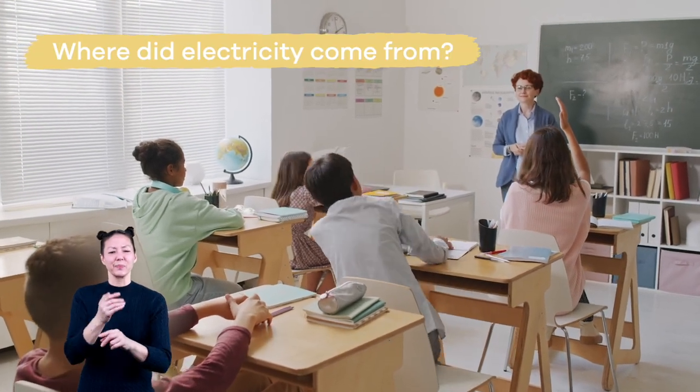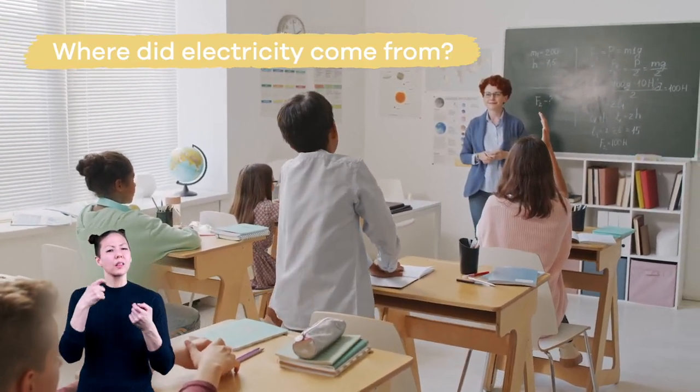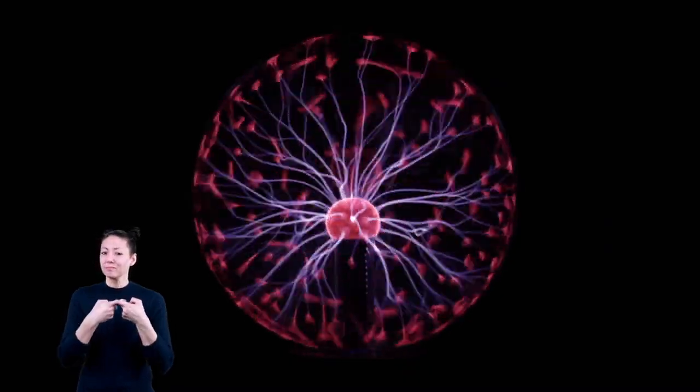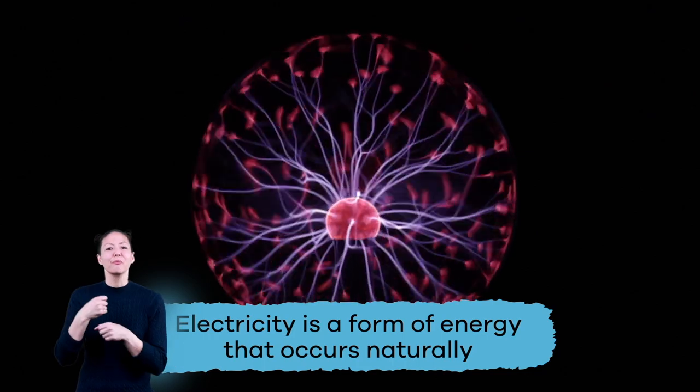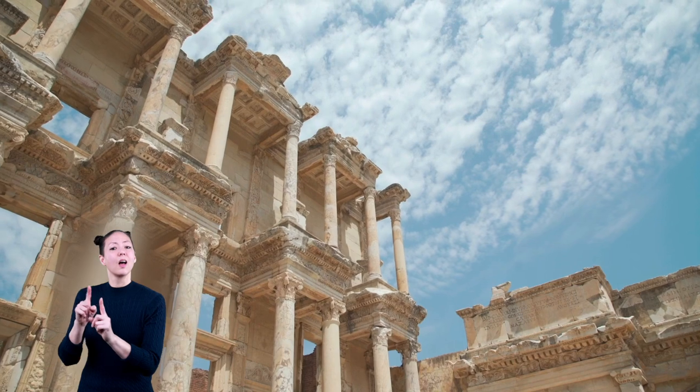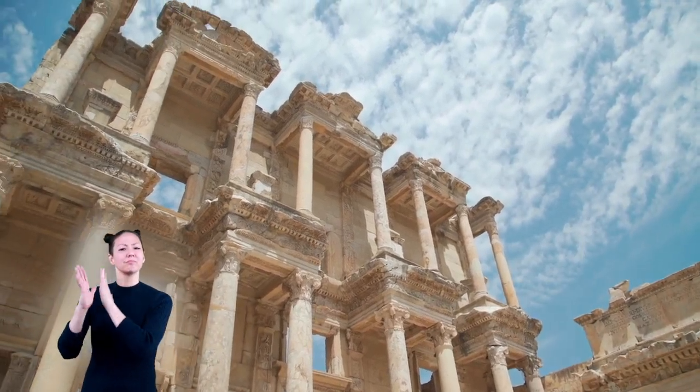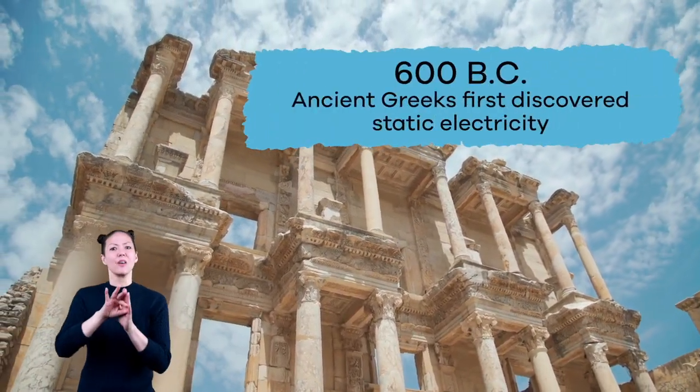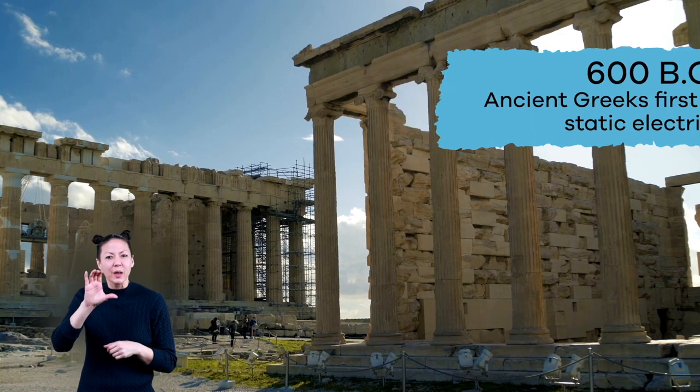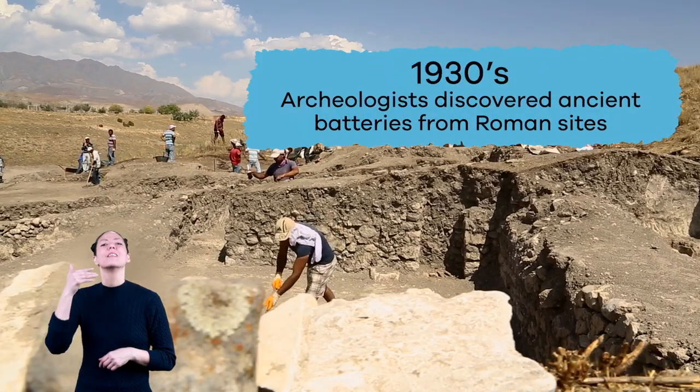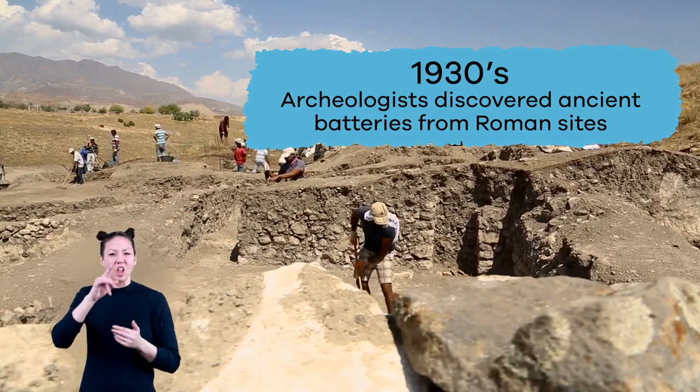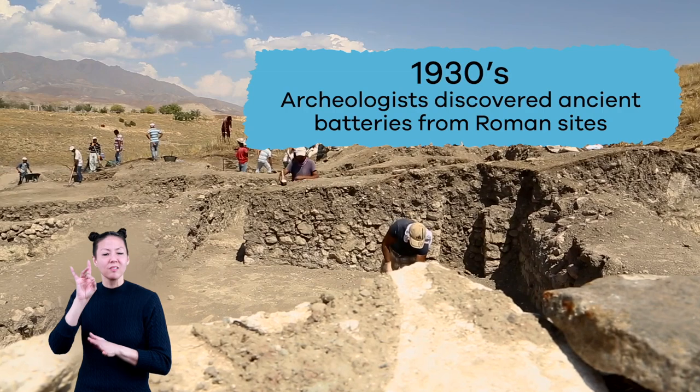So, where did electricity come from? Electricity wasn't invented by anyone. It's a form of energy that occurs naturally. However, it is believed that the ancient Greeks first discovered static electricity in 600 BC. And, in the 1930s, archaeologists discovered ancient batteries that may have been used at Roman sites.